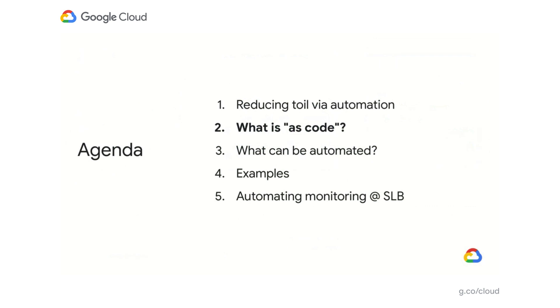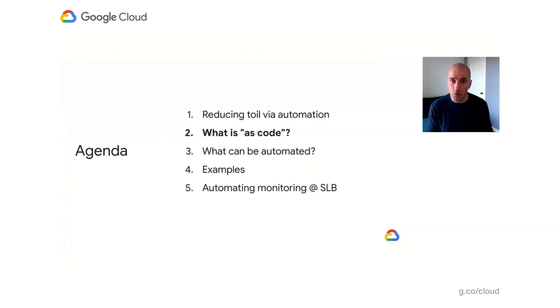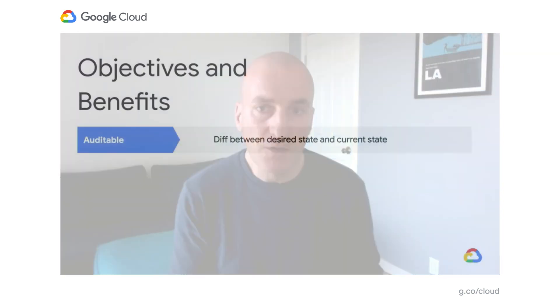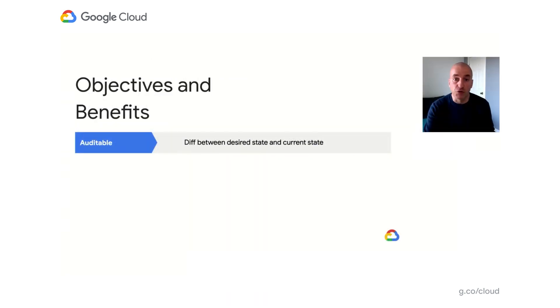So now that we've covered the value of automation, let's talk about what we mean when we say that we want to treat something as code. Here are the things we'll be looking to accomplish. A lot of this comes from the infrastructure as code principles, but there's no reason why we can't think of monitoring as code using the same exact language. So first, we want to be able to accurately determine if there are any differences between what we want to be the case in our monitoring configuration and what is actually currently the case. To that end, we need a way to precisely specify the desired state and be able to retrieve the current state.